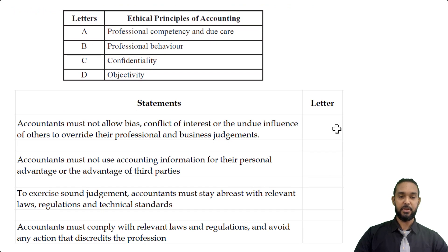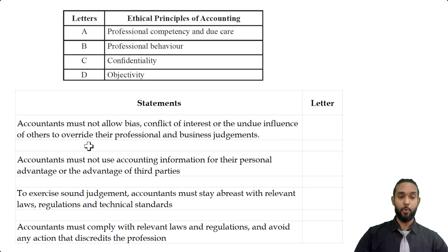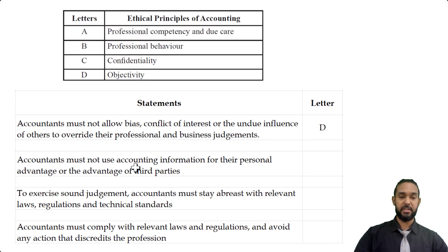I've recreated the information in my Excel. The first statement says accountants must not allow bias, conflict of interest, or the undue influence of others to override their professional and business judgments — that's item D, which is objectivity. Next, accountants must not use accounting information for their personal advantage or the advantage of other parties — that's confidentiality, which is C.